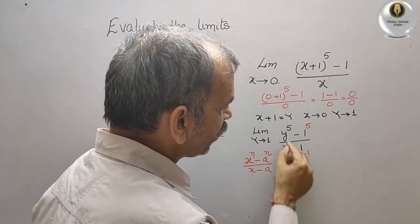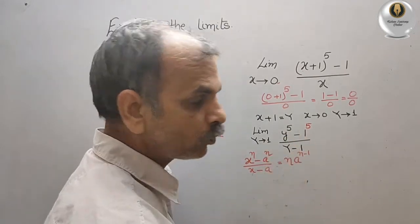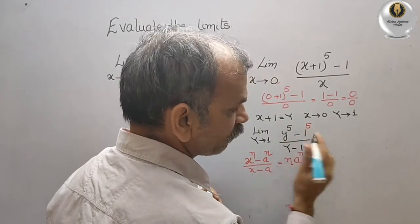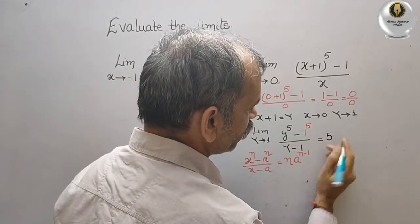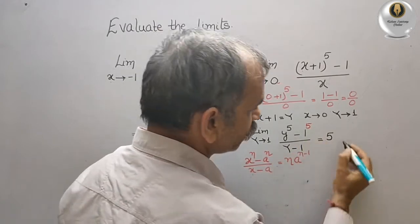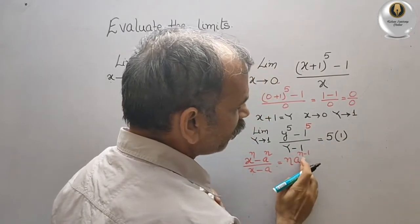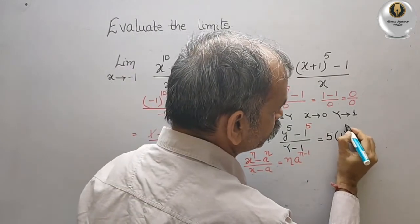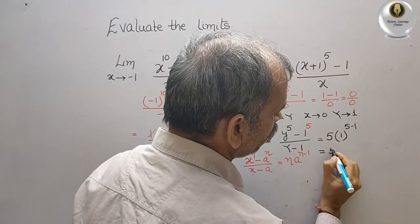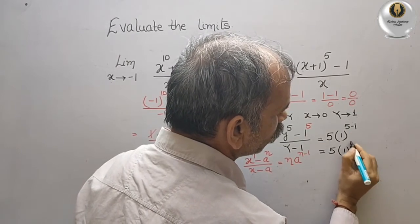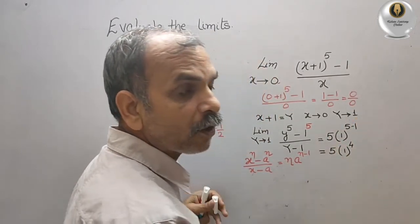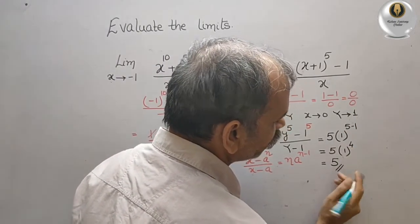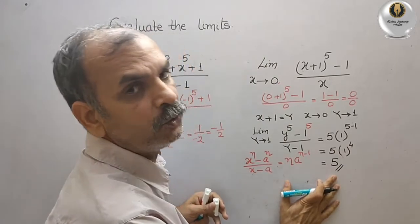The theorem states this limit equals n times a to the power of n minus 1. Here n is 5 and a is 1, so the answer is 5 times 1 to the power of 4, which equals 5 times 1, giving a final answer of 5.